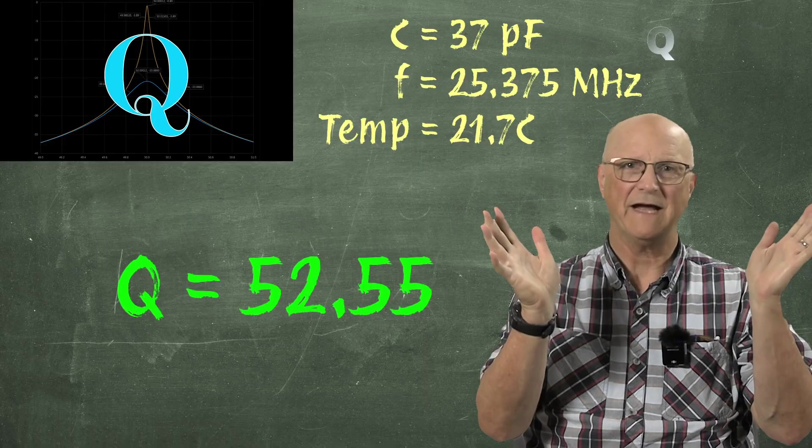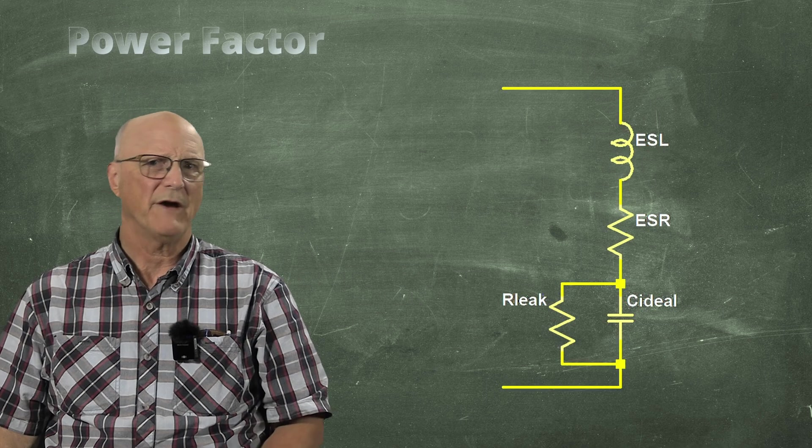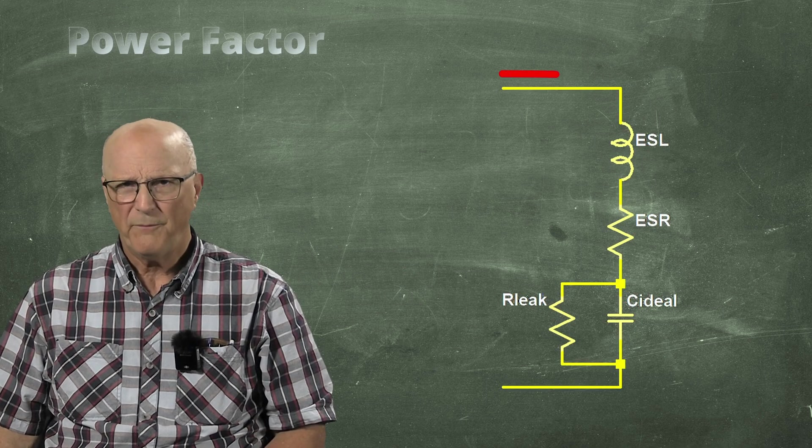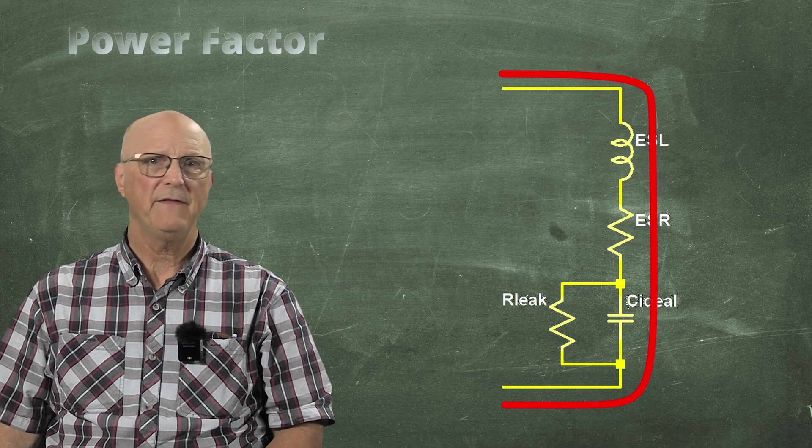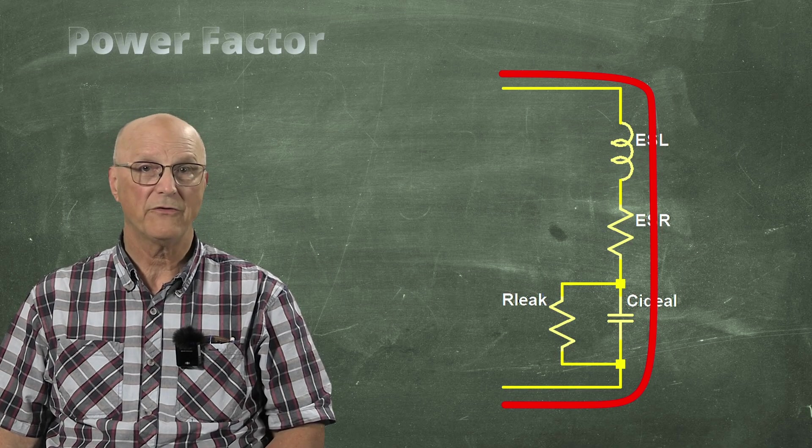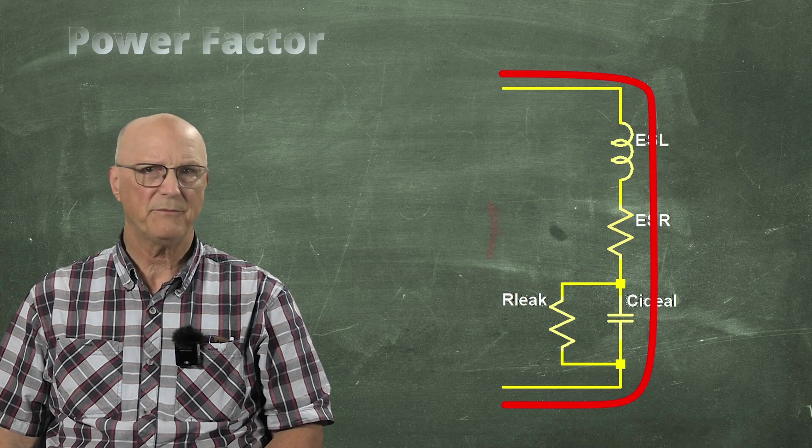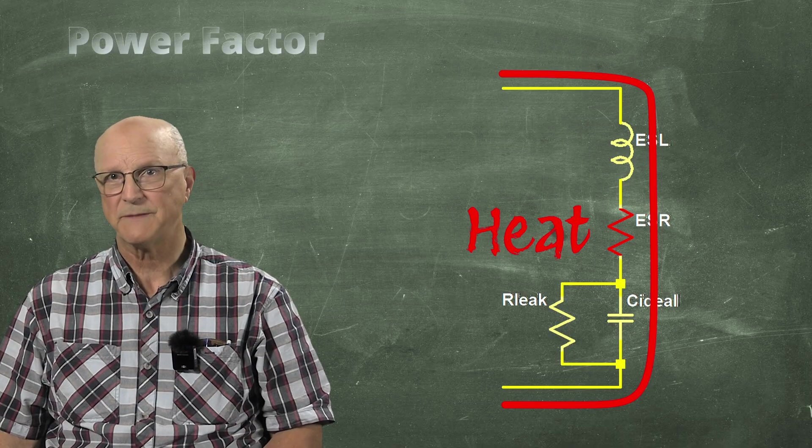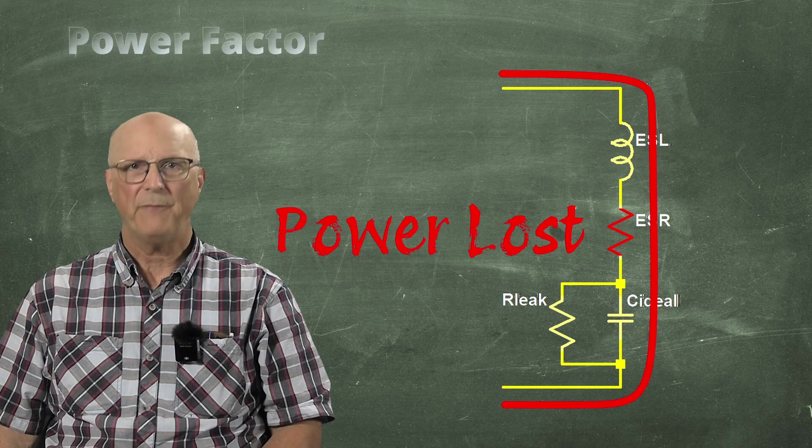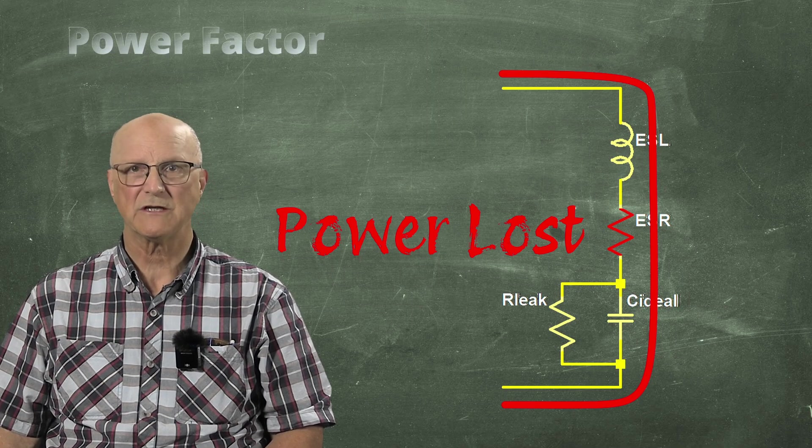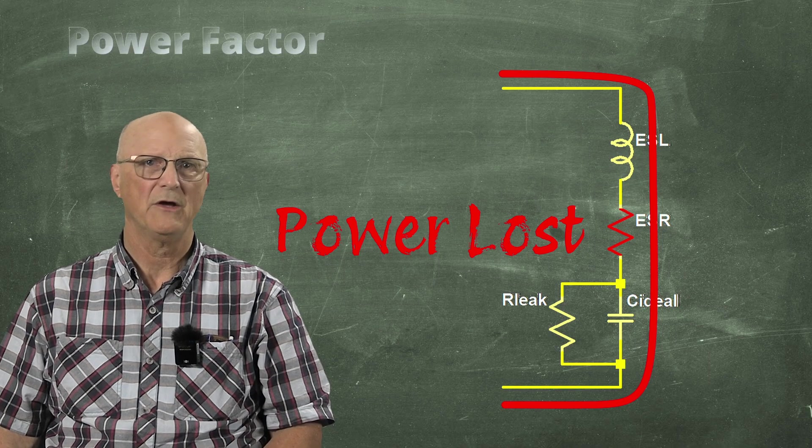OK, we have all of this down, but what about this power factor business? Well, let's go back to our model for a moment. If we are passing current through this capacitor at a given frequency, then there will be a current flowing through the equivalent series resistance. Current through a resistor produces heat. In other words, power dissipated or lost in the form of heat. The power factor is a measure of how much power is lost to the ESR and dissipated in heat. Put simply, the power factor can be found by dividing the ESR by the magnitude of the impedance of the capacitor at a given frequency, applied voltage, and temperature.